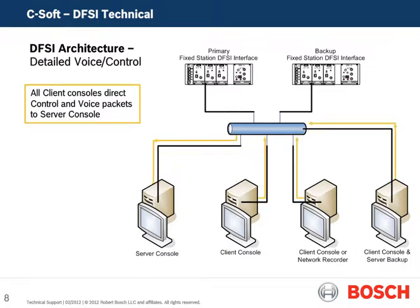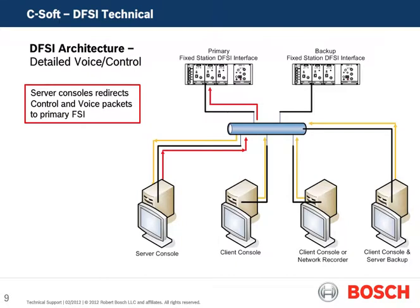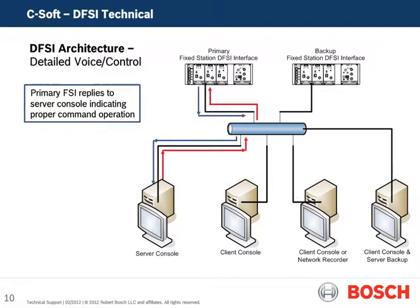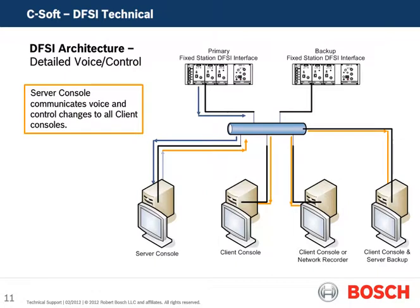Now we'll review the voice and control packets in detail for a client-server install. All clients forward their packets, whether voice or control, to the server console, as depicted by the yellow arrows. The server console then redirects control and voice packets to the primary fixed station, depicted by the red arrows. The primary fixed station replies to the server console indicating proper command operation, shown by the blue arrows. The server console communicates all RX voice and control changes from the fixed station to client consoles, depicted by the yellow arrows.